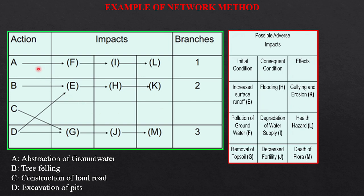Say, action A, if considering a mining project, action B is tree felling, which results in E, increased surface runoff resulting flooding H and resulting gulling and erosion. If we assume that A is the abstraction of groundwater, which causes F, pollution of groundwater, then I is degradation of water supply and the tertiary impact is L, health hazard.